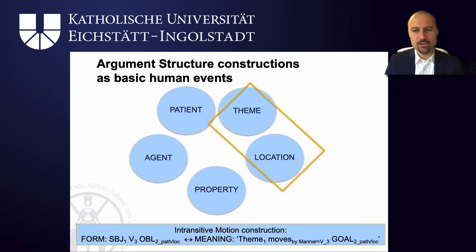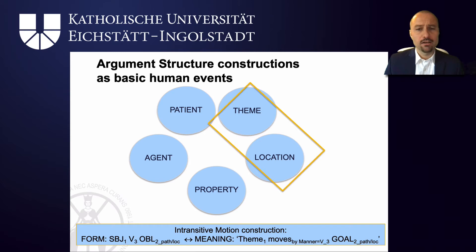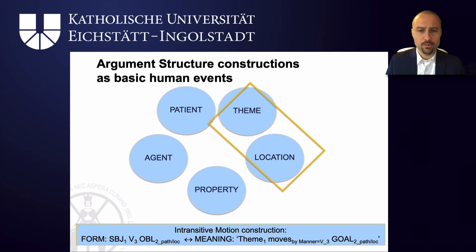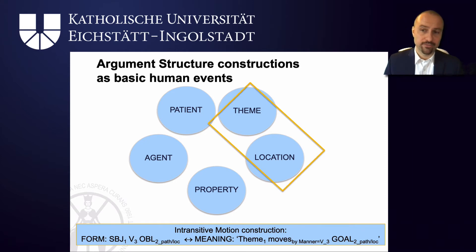In a transitive motion construction — like 'you ran out of the house', 'the fly buzzed into the room', 'a few leaves are drifting to the ground' — the focus is on theme and location. The subject slot is related to a theme, and the oblique slot, mostly realized by a prepositional phrase in English, gives you the path — either the source or the goal of the movement. The verb encodes the fact that this is a motion event.